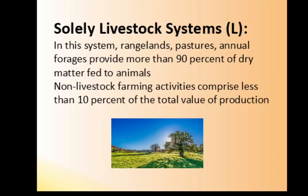The solely livestock system is one of the major classifications. Here, rangelands, pastures, and annual forages provide more than 90 percent of dry matter fed to animals. Non-livestock farming activities comprise less than 10 percent of the total value of production.